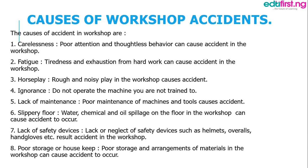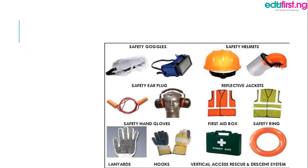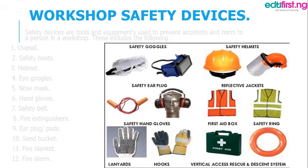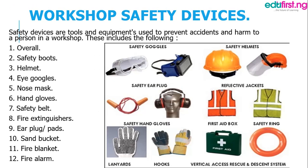There are also tools and equipment used to prevent accidents in the workshop, and they are called workshop safety devices. Examples include your fire extinguisher, fire alarm, overall, safety boots, eye goggles, helmets, and fire blankets — some examples of workshop safety devices.